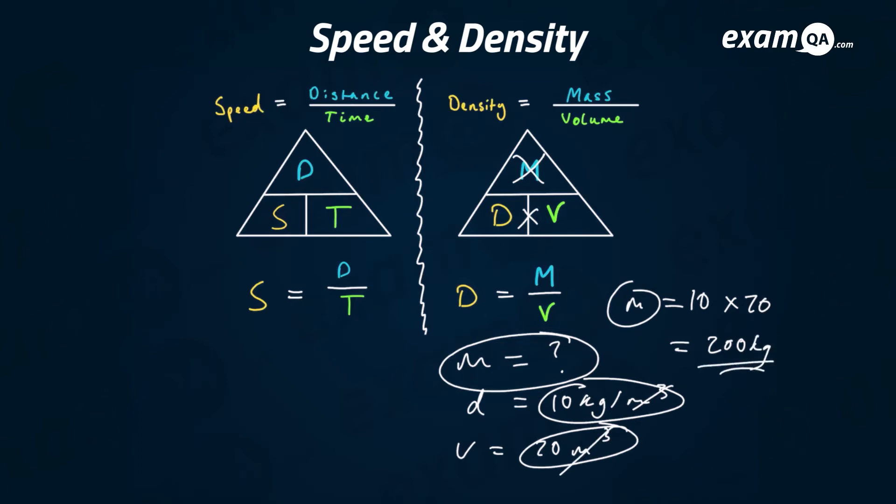We get 200 and because it's mass meter cubed, meter cubed cancel out and we get 200 kilograms. They'll most likely tell you what the units are in the question so you don't have to worry too much about cancelling. If you prefer to use a triangle use a triangle but the equation itself is probably better to use if you're good at algebra.